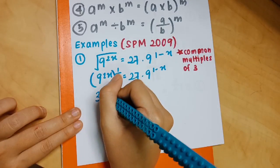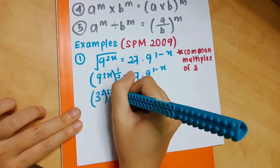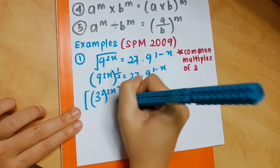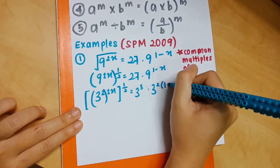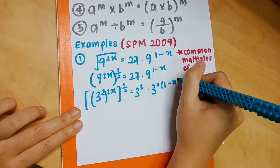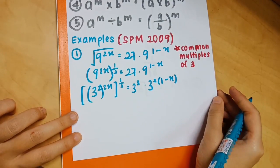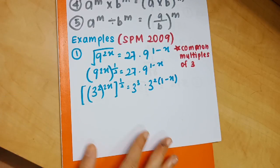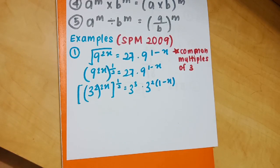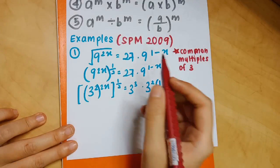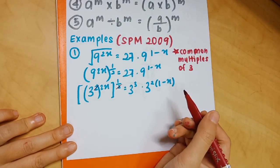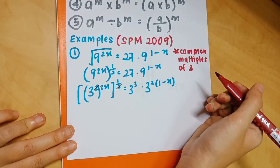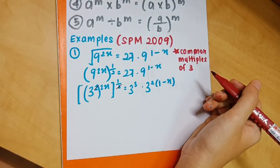Now change everything to base 3: 9 is 3 squared and 27 is 3 cubed. Change everything to multiples of 3. You'll notice that 1 over 2 and 2 cancel out, so you're left with only 3 to the power of 2x.